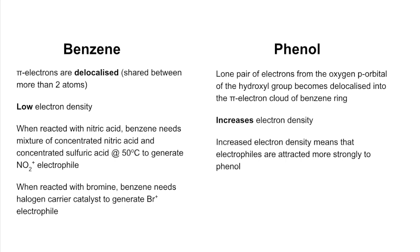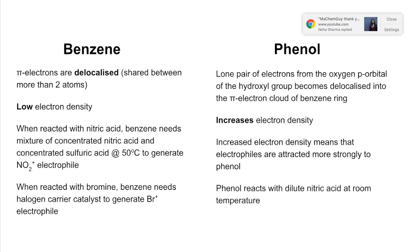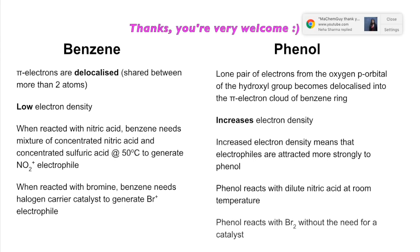The increased electron density means that electrophiles are attracted more strongly to phenol, and so phenol reacts with dilute nitric acid at room temperature. And in the case of phenol and bromine, it reacts with bromine without the need for a catalyst.